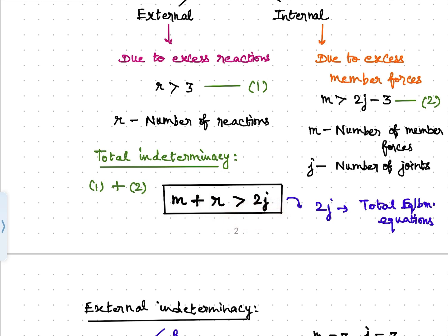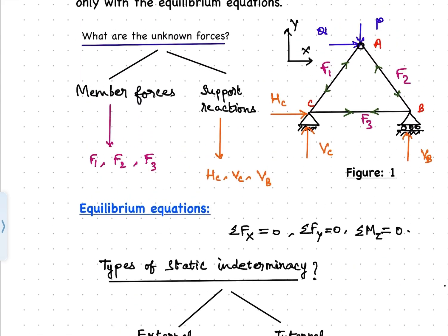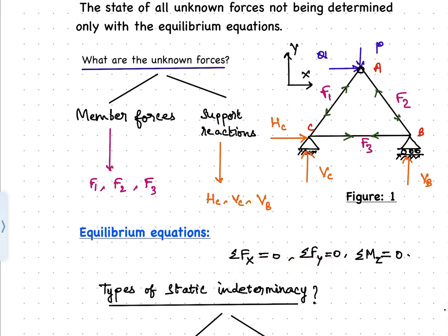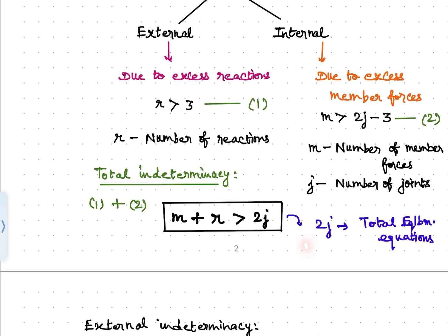This means the number of equilibrium equations is less than the number of unknowns. Why 2J? Because at each joint — such as joints A, B, and C — two equilibrium conditions must be satisfied: sigma FX equals zero and sigma FY equals zero. As there are J joints, the total number of equilibrium equations is 2J. If equilibrium is met at every joint, it automatically guarantees equilibrium of the entire truss system.